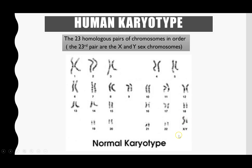In this human karyotype, the chromosomes are X and Y, so biologically this individual would be male, because males have a Y chromosome.